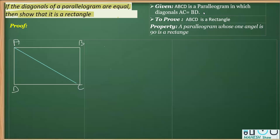So if I draw, say this is AC, that's one diagonal, and I'm going to draw BD, the other diagonal. So the given information is that ABCD is a parallelogram and the diagonal AC is equal to BD, and we have to prove this is a rectangle.